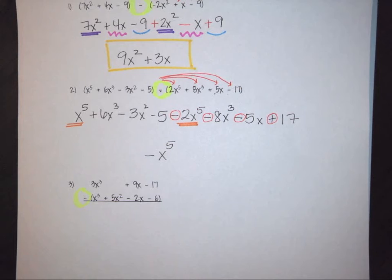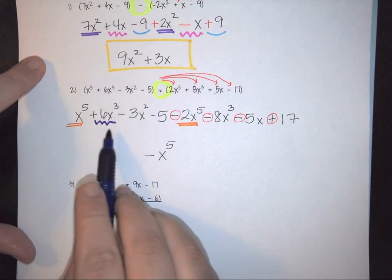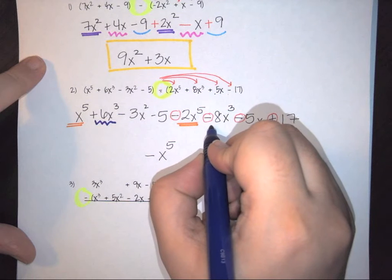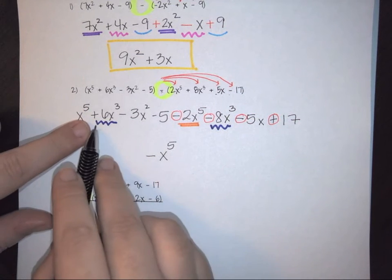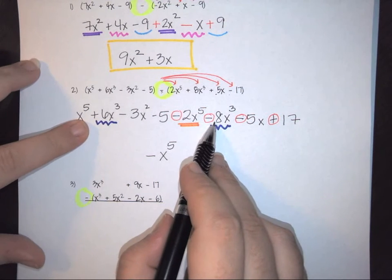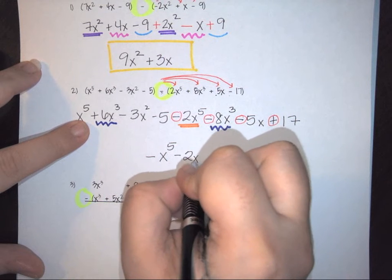I then have this x cubed. So I'm going to again look down and here I have an x cubed. So I have 6 positive 6 and a negative 8. So this is going to give me a negative 2x cubed.